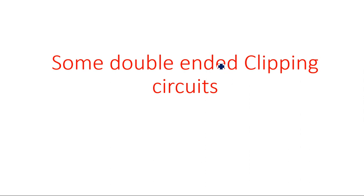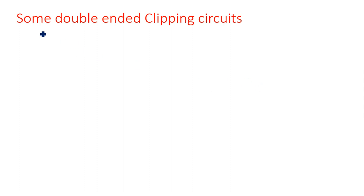In this video, I am going to explain about some double-ended clipping circuits. In the previous video, I gave an explanation of clipping at two independent levels with two diodes and two reference voltages, where VR1 is positive and VR2 is negative. Now a few more circuit diagrams also perform this type of clipping at two independent levels. In the first one, consider a resistor followed by two diodes like the previous case, but here instead of taking VR2 as negative, I am taking it as a positive signal.